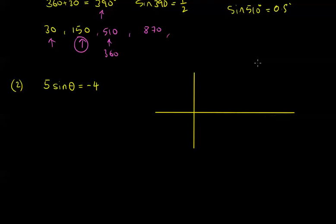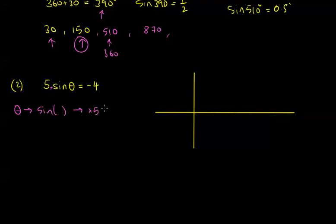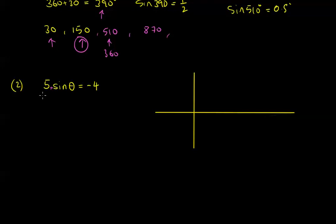Let's look at another type of question and try to find multiple answers. We have that 5 sine theta equals minus 4. This literally means 5 times sine of something equals minus 4. To reverse the process, you'd first divide both sides by 5, so sine theta equals minus 4 over 5, which is minus 0.8.